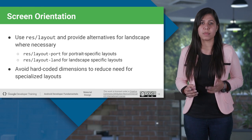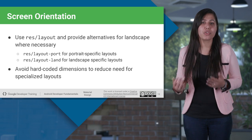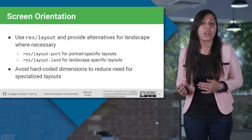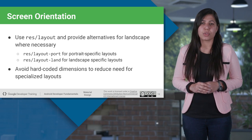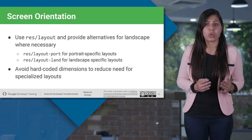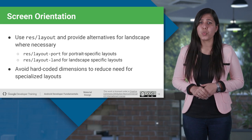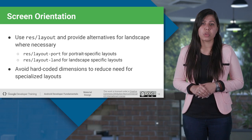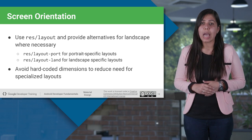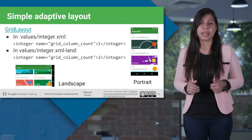We already know that we get the layout folder by default to design the layout in portrait view. But what happens to the UI components when the user changes the orientation of the screen? To define layouts specifically for portrait and landscape mode, you need to provide alternate layout resources. In case you don't want to work with specific layouts, you need to stop hard coding dimensions, as they may overlap when orientation gets changed.